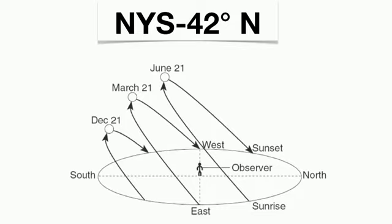Next is the spring sun and the fall sun — the March 21st path. That path rises exactly east and sets exactly west. The altitude of the sun is going to be about 48 degrees above the horizon, producing a medium-length shadow. There will be about 12 hours of daylight across the entire planet on this day. The fall sun and the spring sun take the exact same path. You still have a southern noon sun, so you have to look south, and you're going to have a medium-sized shadow for the observer.